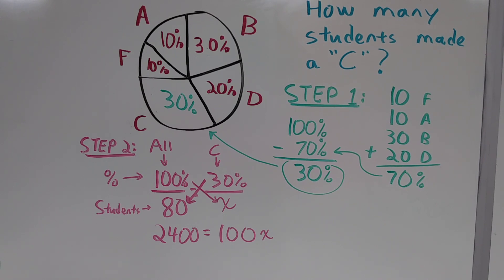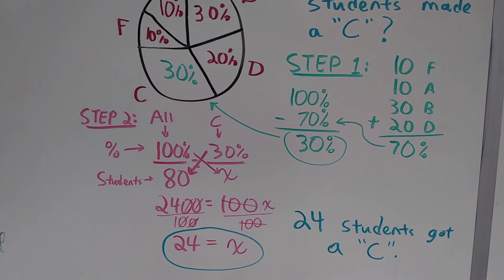We'll use good old-fashioned cross-multiplication. 30% times 80 is 2400. 100% times x is 100x. We divide both sides by 100 to get x by itself, and we wind up with x equals 24. So 24 students got a C.